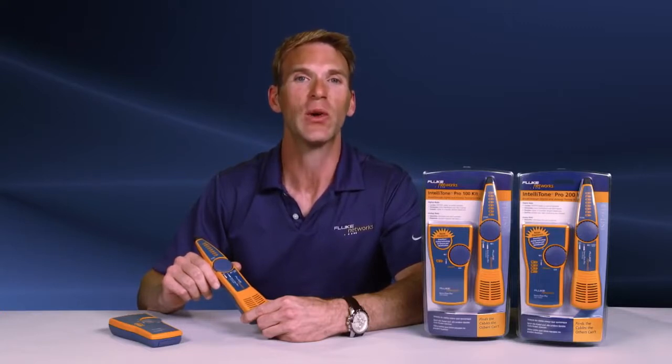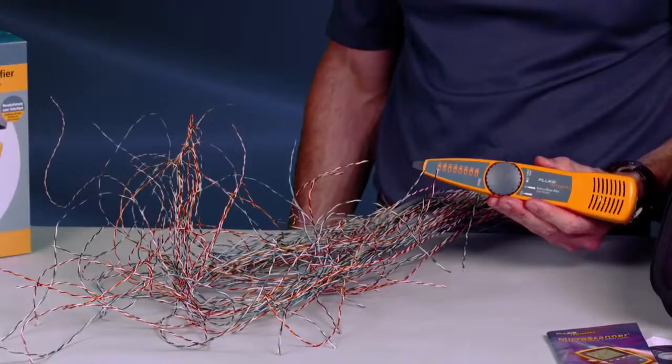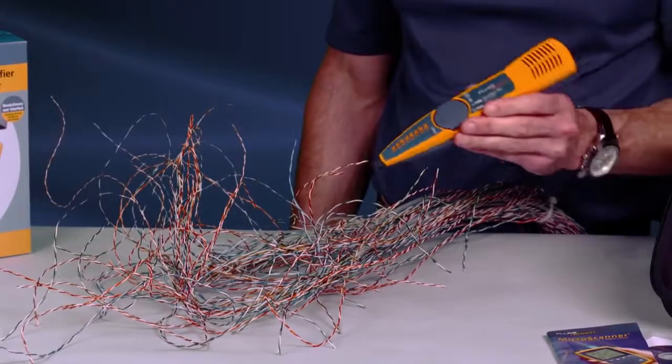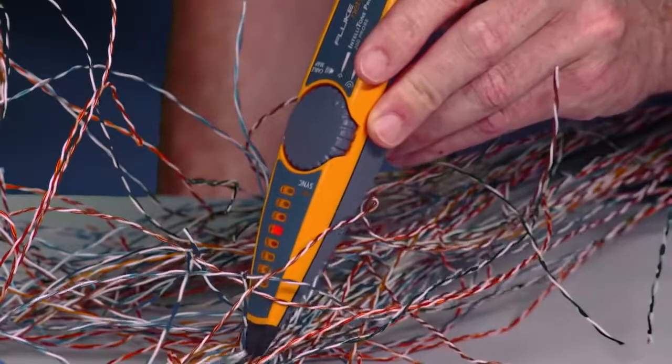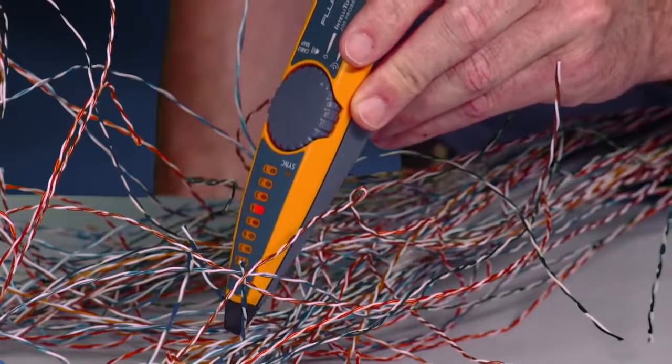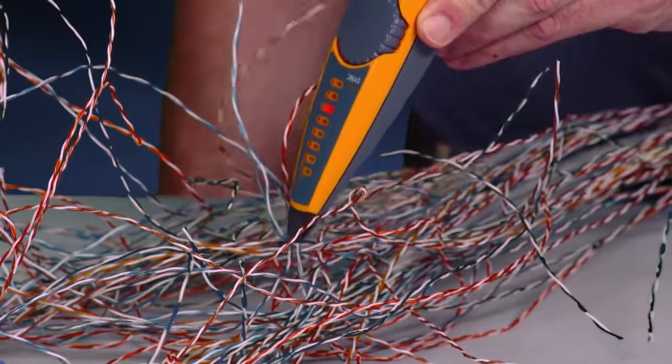Use the IntelliTone Pro to quickly locate cables and locate individual pairs with a smart tone analog function. We've connected the toner to a random pair in our rat's nest of cabling. It's no problem for the IntelliTone Pro from Fluke Networks. The IntelliTone Pro finds the right wires every time.